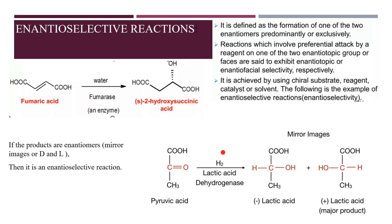Depending upon which enantiomer is formed in major amount or selectively, we call it an enantioselective reaction. Out of the two possible isomers, one is formed in major and one in minor. These two are mirror images of each other — plus lactic acid and minus lactic acid. The plus one is formed in major amount and minus is formed in minor amount. Hence it is called an enantioselective reaction.